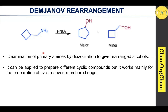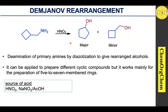Along with the rearranged alcohol, sometimes a minor amount of unrearranged alcohol derivatives also occurs. This rearrangement reaction can be applied to prepare different cyclic compounds, but mainly it is useful for the preparation of five to seven membered ring systems. Another important point is that this rearrangement reaction can be used for both ring expansion as well as ring contraction protocols.